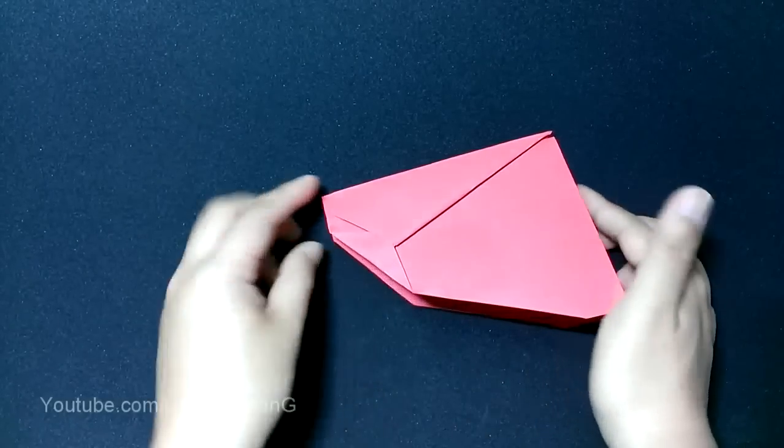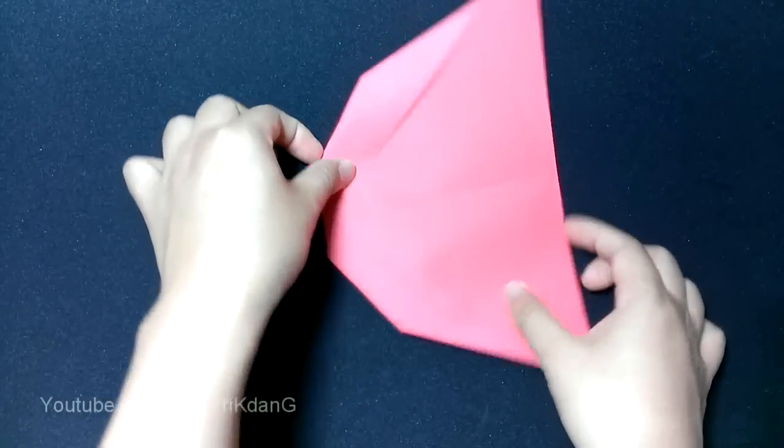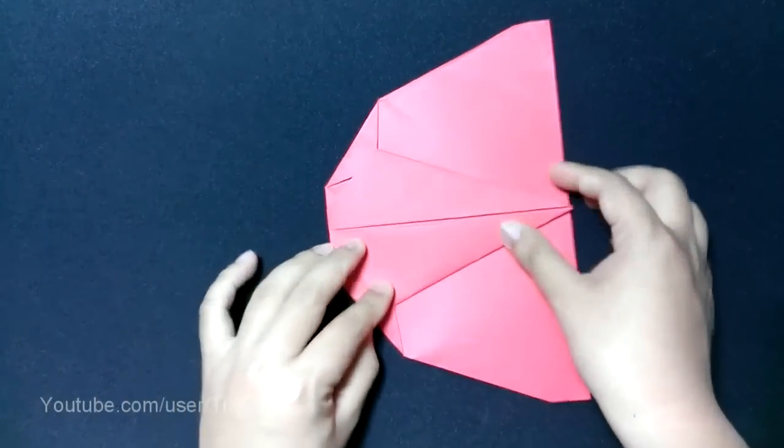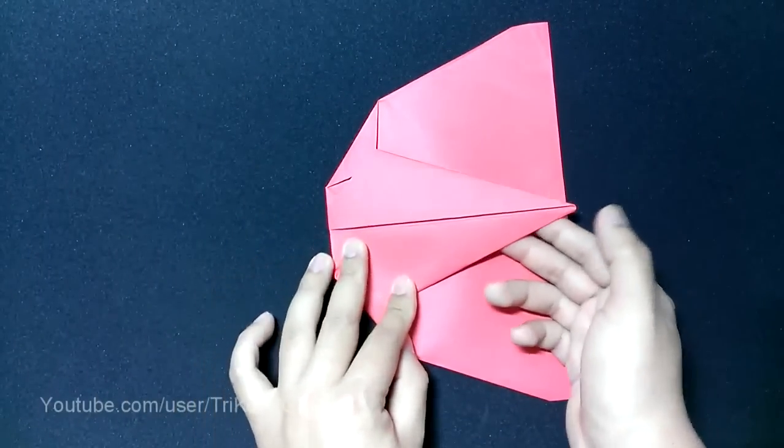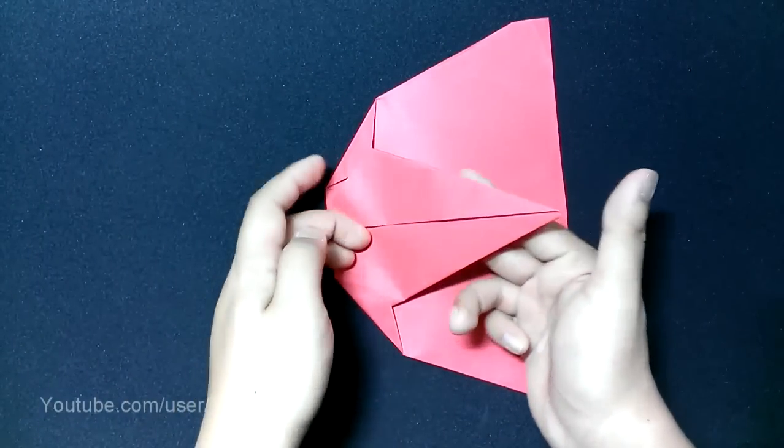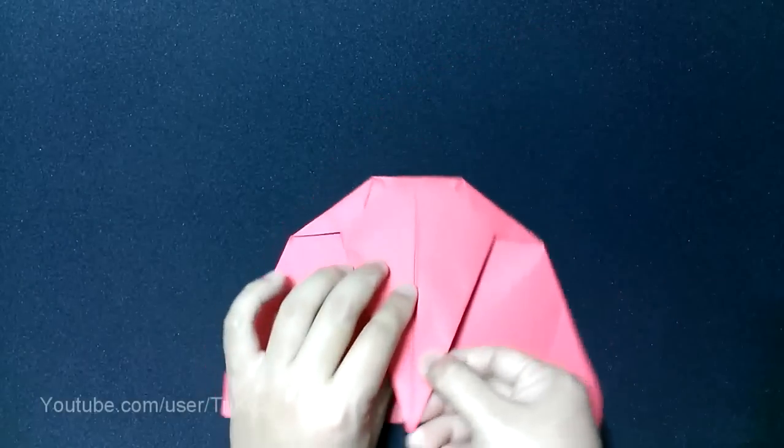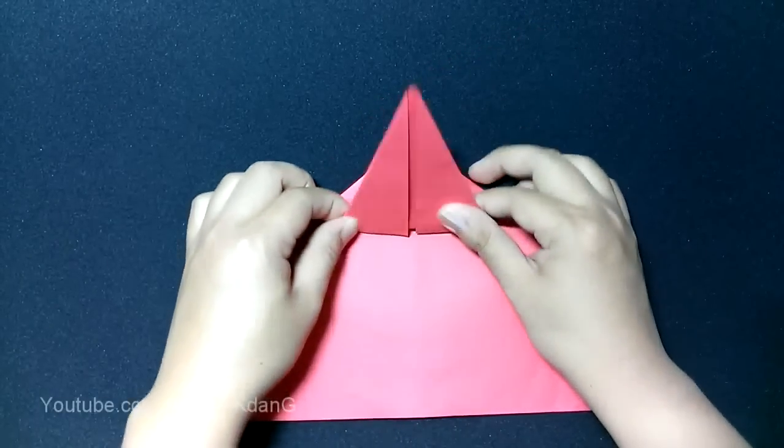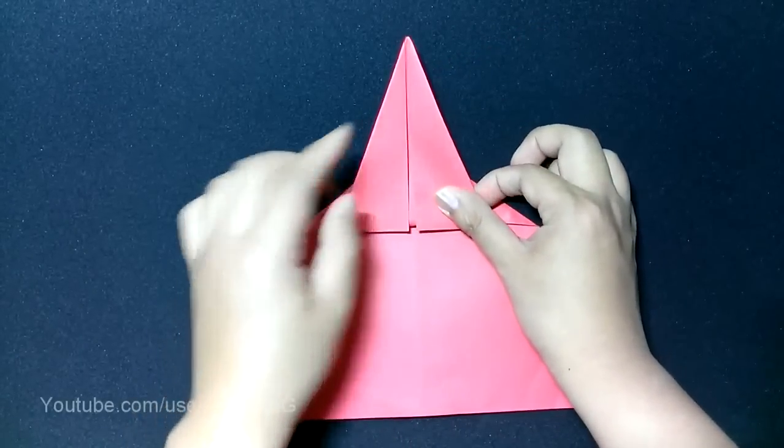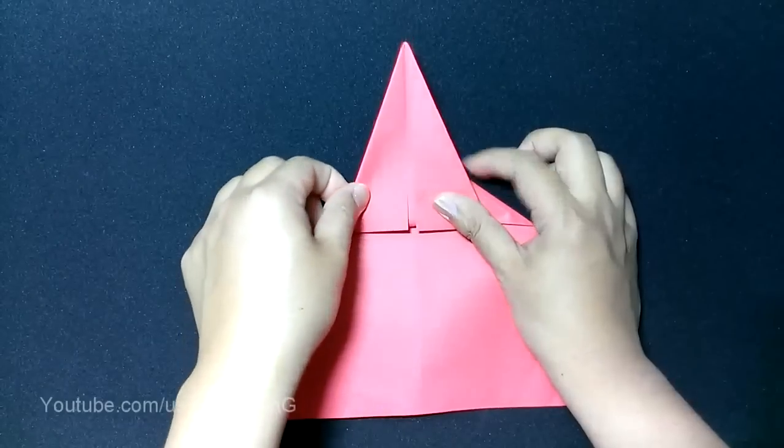Now, we open the paper back like this and turn it over. Next step, I'll fold this part of the paper up. But I will turn the paper this way first. Then I just fold it up. When I fold this part up, I use the center crease as my reference.